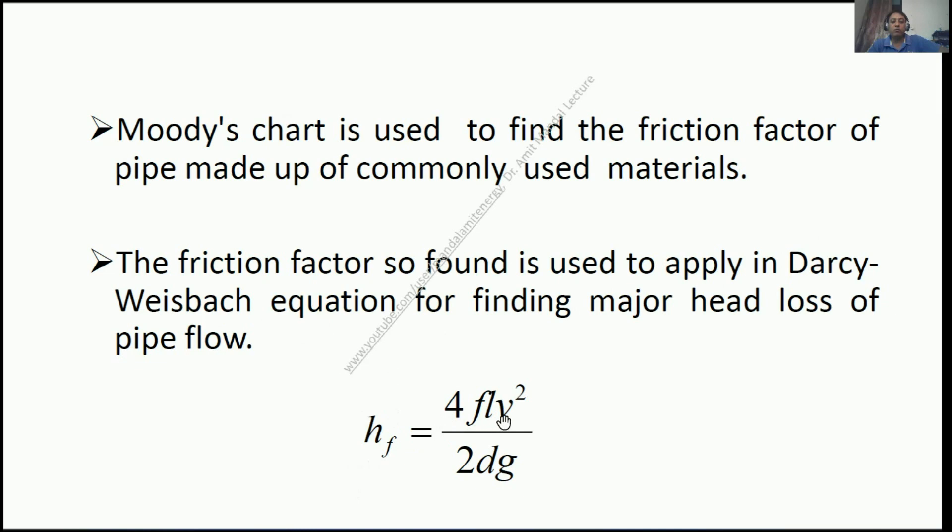The head loss hf equals 4fLv²/2dg, where f is the friction factor, L is the length of pipe, v is the velocity of flow, d is the diameter of pipe, and g is acceleration due to gravity. So this is the major head loss. Now over here you can see this f, so Moody's chart is particularly used to find this value of f for a particular kind of pipe.